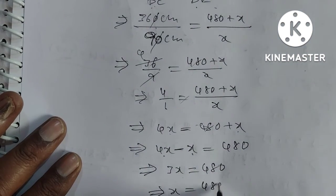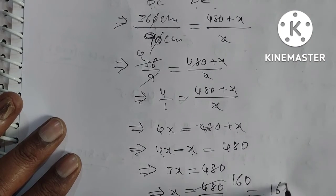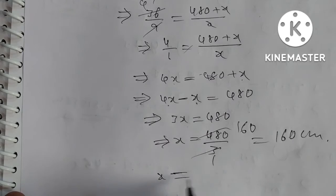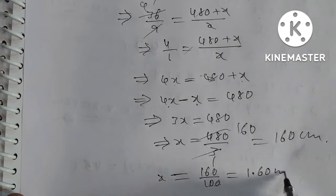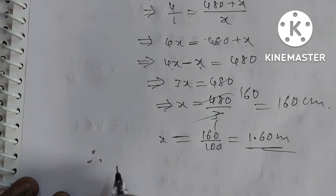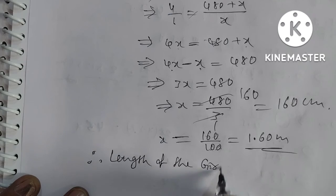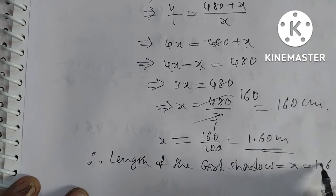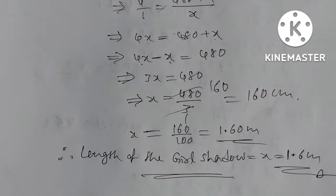So X equals 480 by 3, which equals 160 centimeters. Converting to meters: X equals 160 by 100 equals 1.6 meters. Therefore, the length of the girl's shadow is equal to X equals 1.6 meters. This is the answer. If you like and share, please subscribe to the channel.